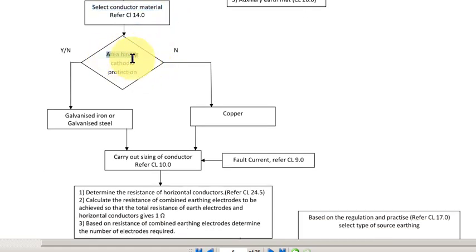If the area is not having cathodic protection, go for copper. If the area is having cathodic protection, you can either go for galvanized iron or galvanized steel.